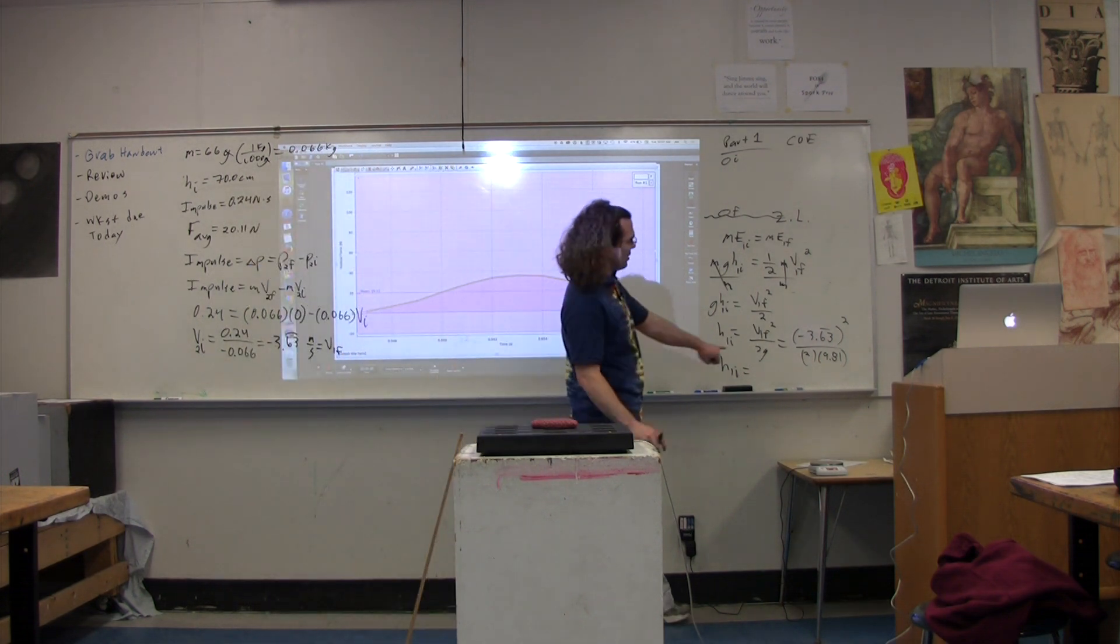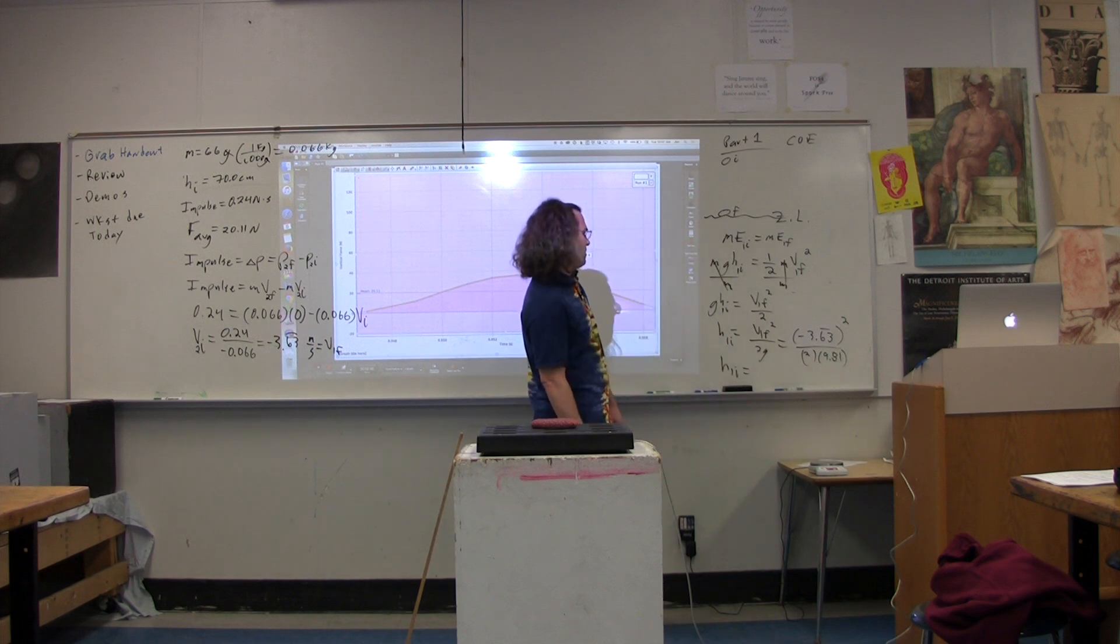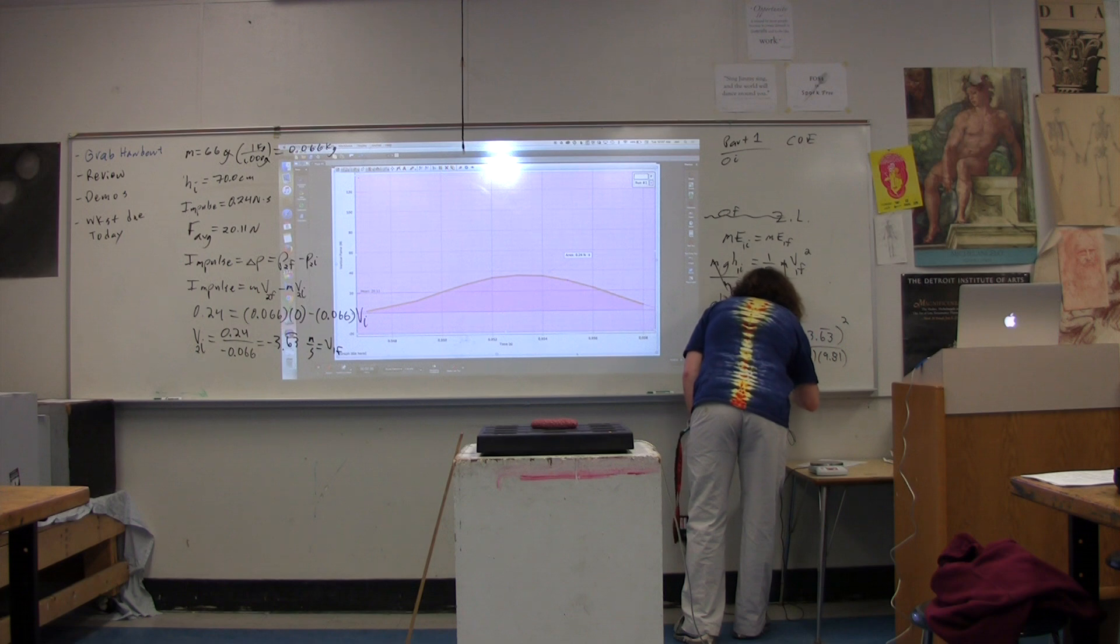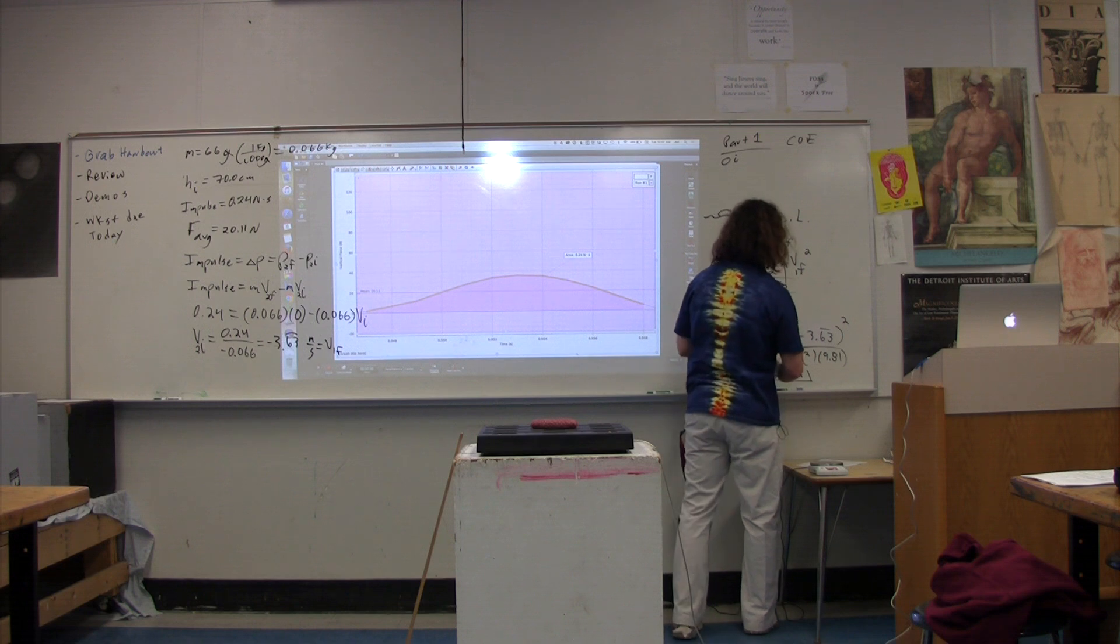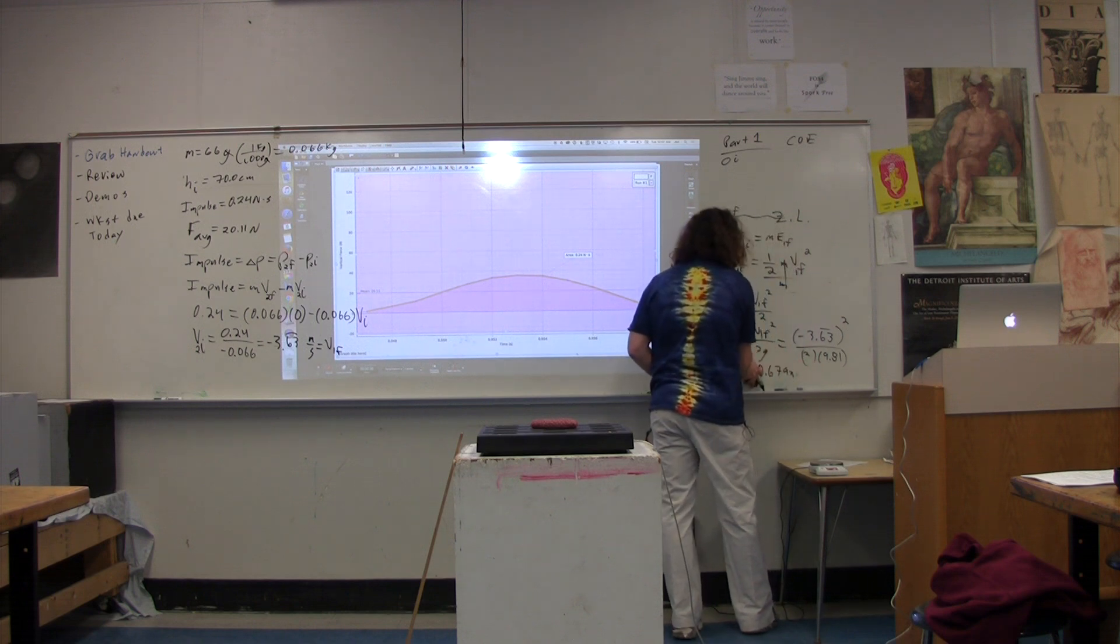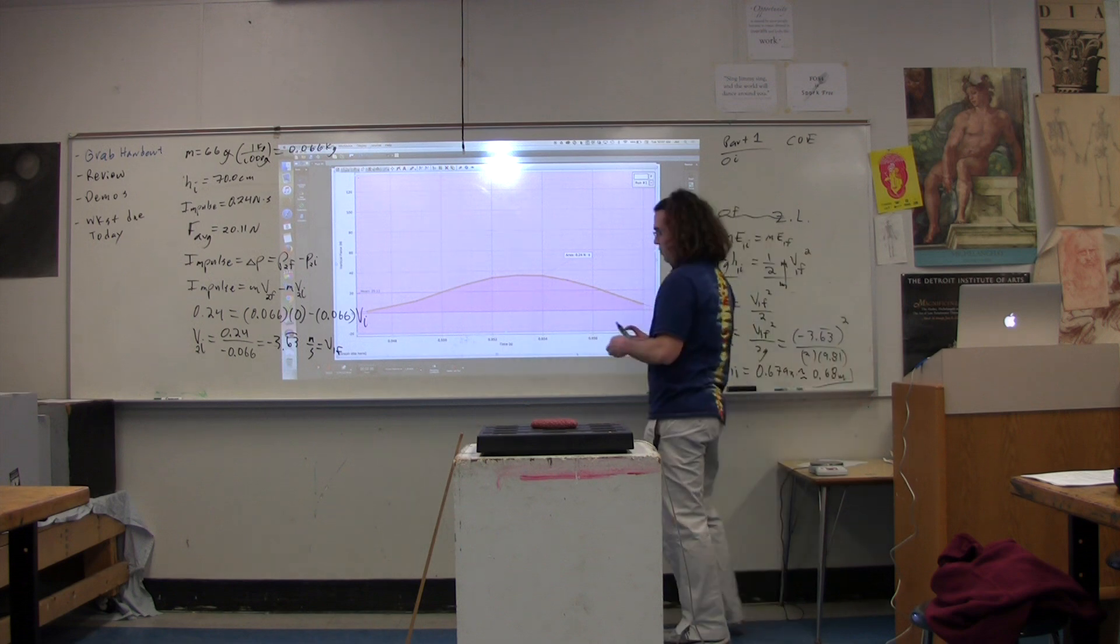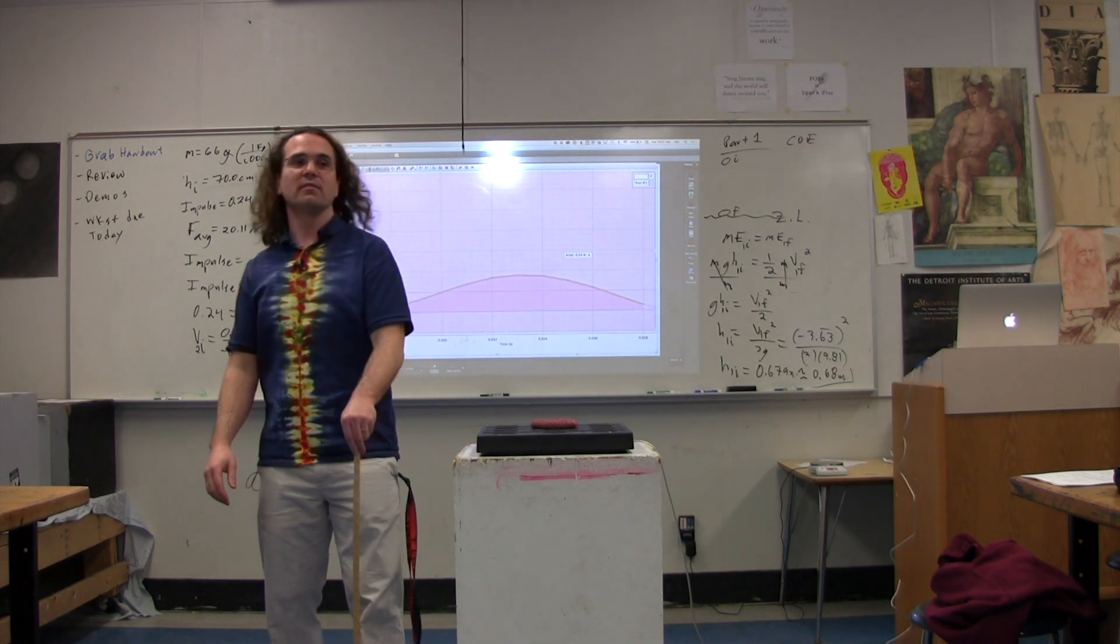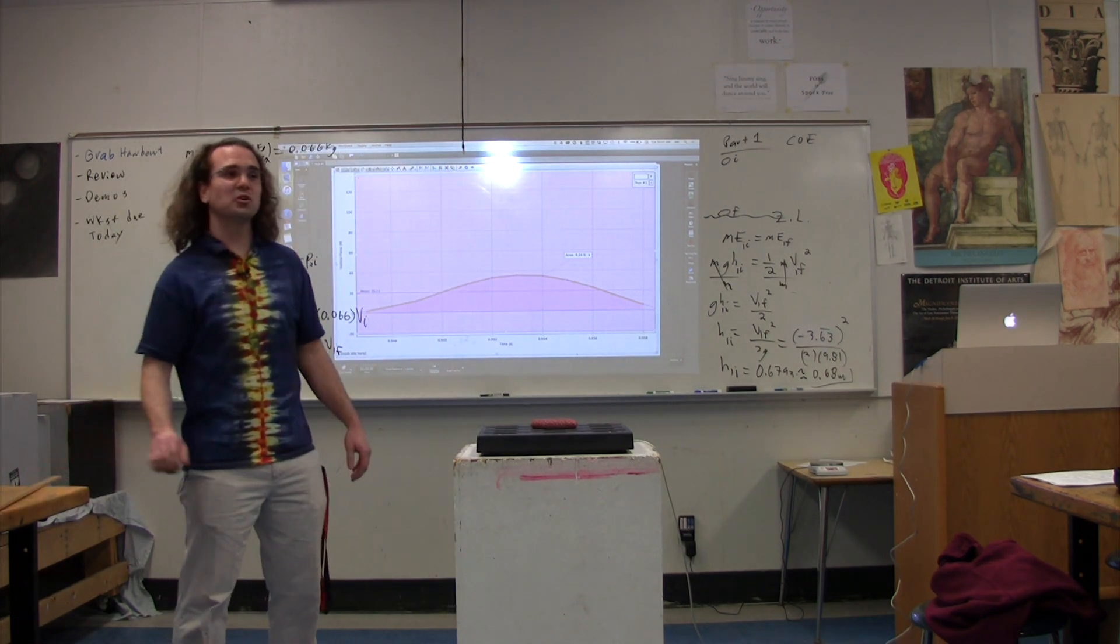0.673. I don't think we're going to end up with that, because this is 3.6, which we're going to square. 0.6739. Everybody get that? Yeah. 0.6793, and this is the height initial. So with sig figs, we have 0.68 meters. What was our initial height supposed to be? Seven. Seven. Pretty close? Yeah. Pretty close. Thank you.